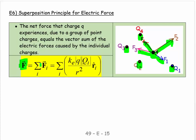So the equation is that the vector force is equal to the sum of all the little vector forces, and that is the sum of all my ke's, my different q, my different q_i, and my different distances.